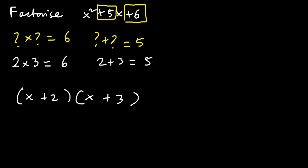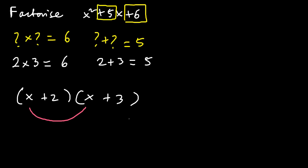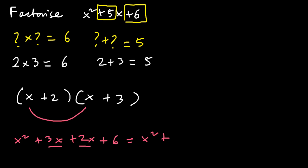If you wanted to check that your answer is correct, you can expand this to see if it gives you the original trinomial. That would be x times x, which is x squared, then x times 3 which is 3x, then 2 times x which is 2x, and 2 times 3 which is 6. That simplifies to x squared plus 5x plus 6, which is indeed the original trinomial.